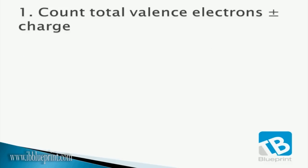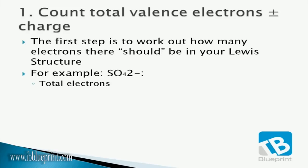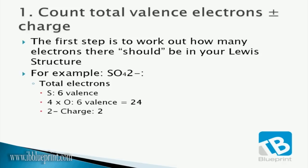Step 1 is counting the total valence electrons plus or minus the charge — working out how many electrons there should be in total in your Lewis structure. For the sulfate ion SO₄²⁻, sulfur has six valence electrons. There are four oxygens, each with six valence electrons, giving 24. Six plus 24 is 30, and then you add two more electrons for the 2⁻ charge, giving a total of 32 electrons.